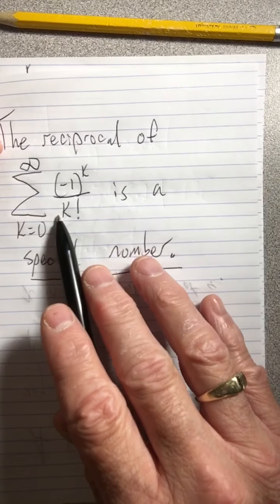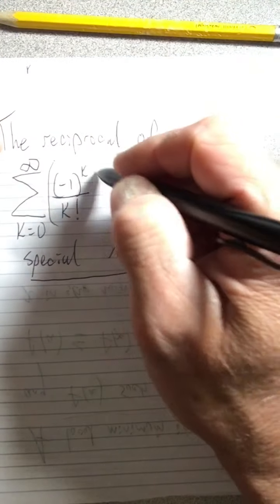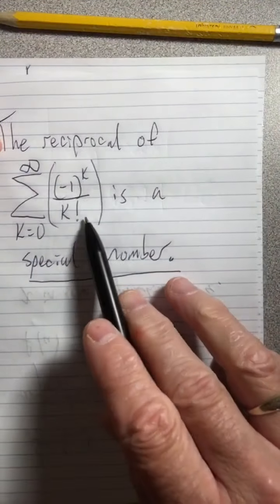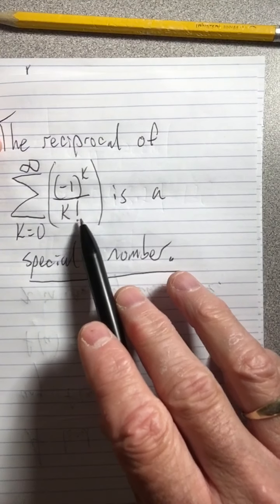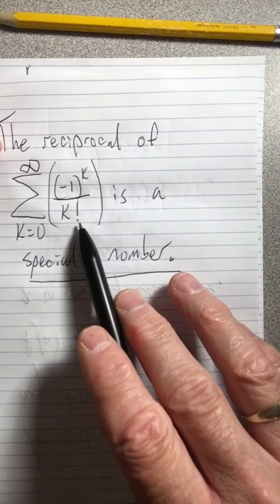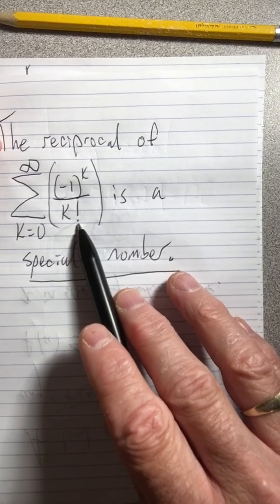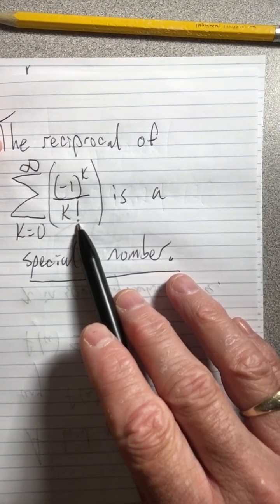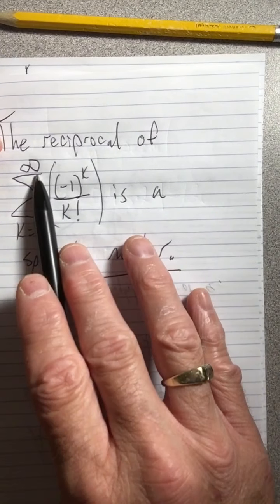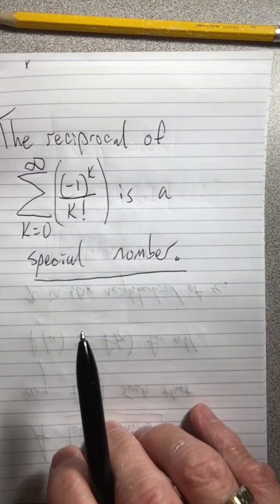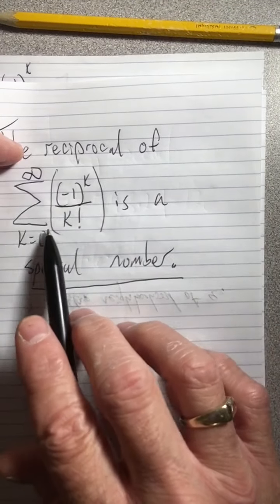But what we can do is use our trick for estimating it. Sometimes when these values that you're adding and subtracting get tiny, you only have to add a few terms to get a fairly good estimate of an infinite long series. We did some of that earlier in the semester, so let's try that now.